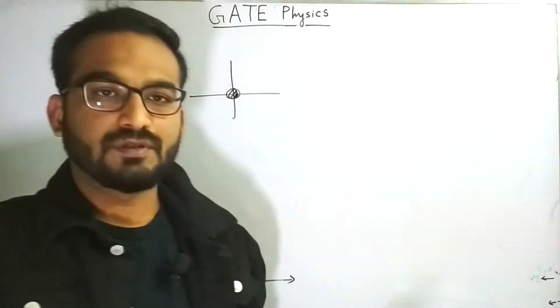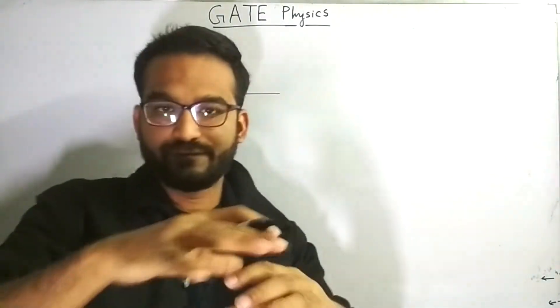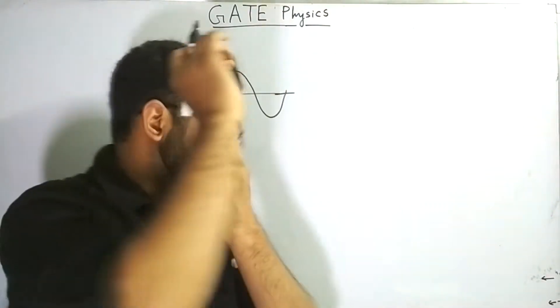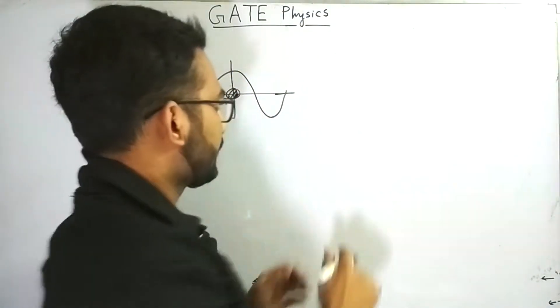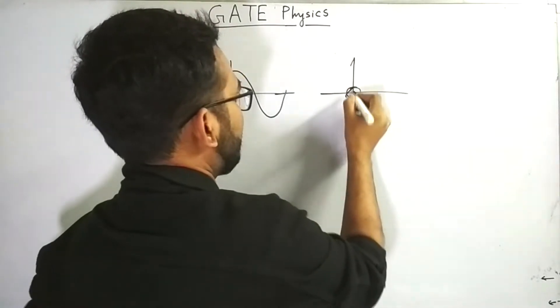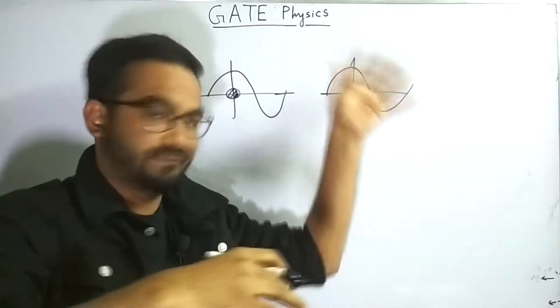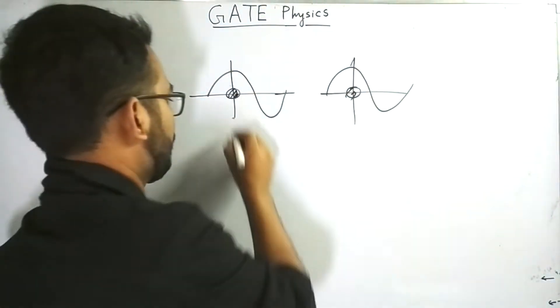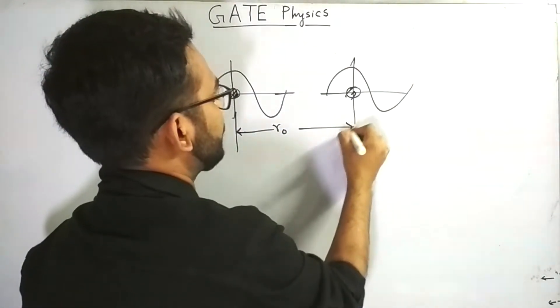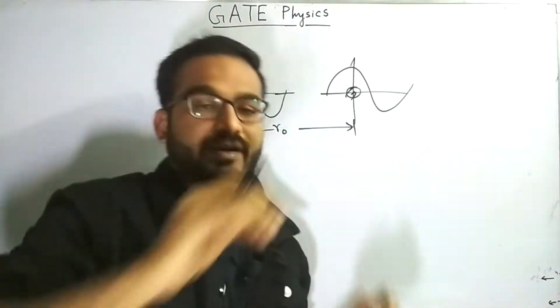Now from de Broglie hypothesis, we know that every material particle will have its corresponding wave. So suppose this is the corresponding wave of this material particle. And we are considering another particle which is situated beside this particle. So this is a gas particle and it will also have its corresponding thermal wavelength or wave in nature. Now, let's say the distance between these two atoms is R naught.